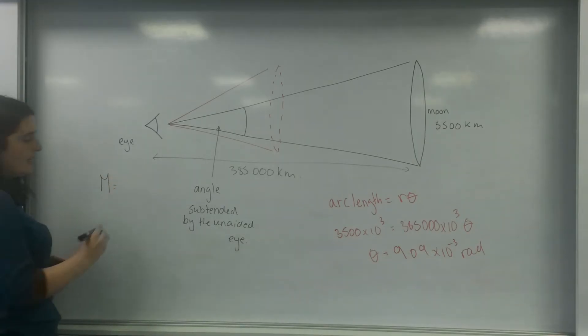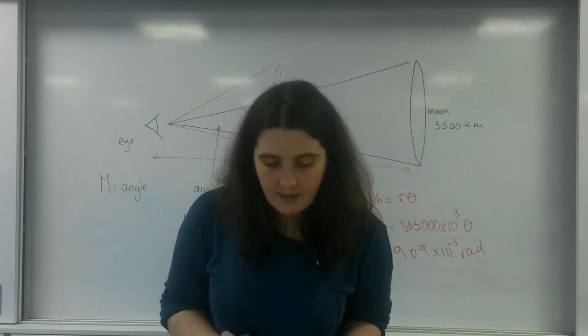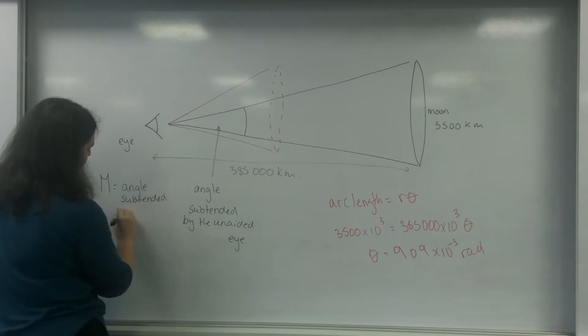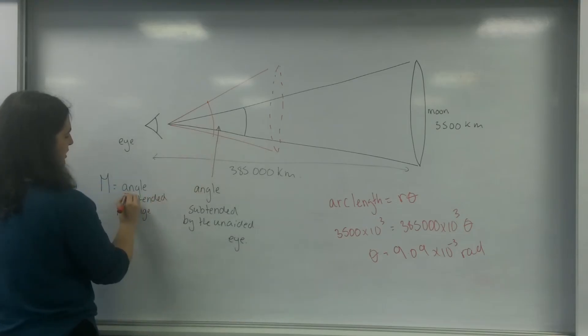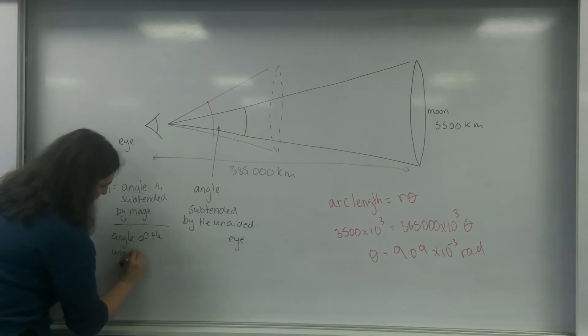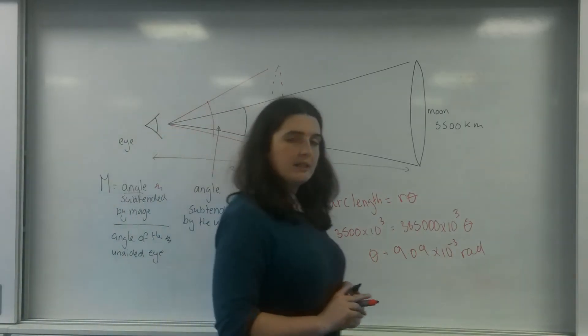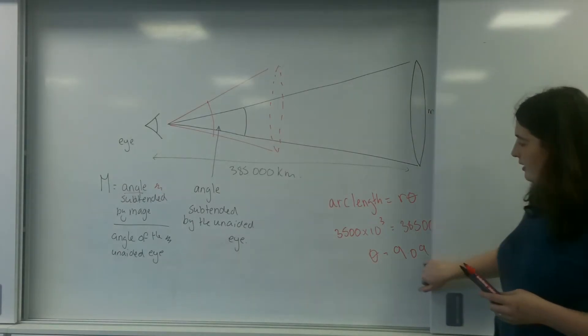So magnification, or big M, is the angle subtended by the image, so it's going to be this angle here, so I'm just going to underline that and I'm going to just color it in red, divided by the angle of the unaided eye, and that's in the black there. So in this case, I've worked out my angle is 9.09 times 10 to the minus 3.